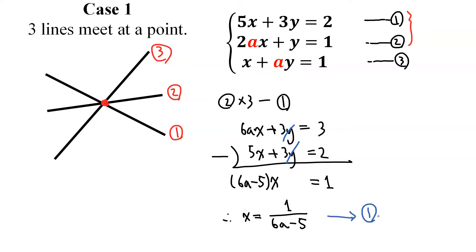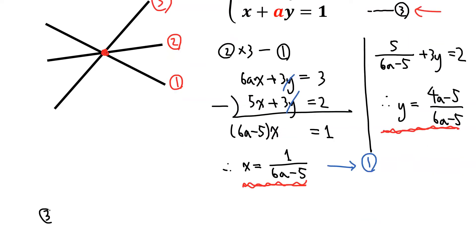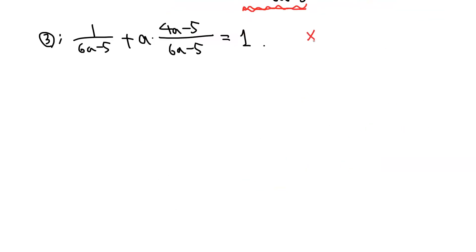And if we use this value in the first equation, we have 5 over 6A minus 5 plus 3Y equals 2. And from here, we obtain Y equals 4A minus 5 over 6A minus 5. Now these X and Y values must also satisfy the third equation. So from equation 3, we have 1 over 6A minus 5 plus A times 4A minus 5 over 6A minus 5 equals 1. Now let's multiply 6A minus 5 on both sides.